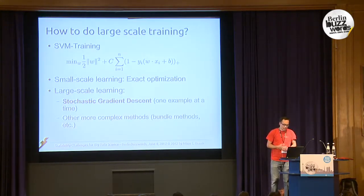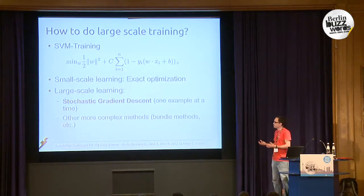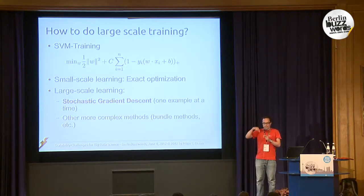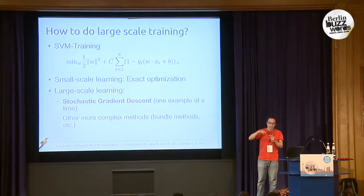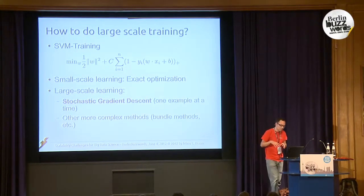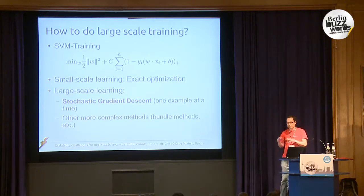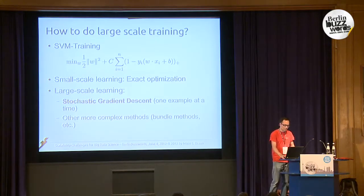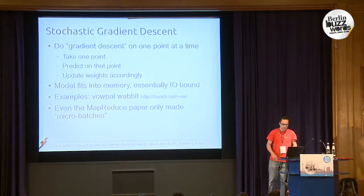People found that if you have a lot of data you can use stochastic gradient descent — you optimize the function one point at a time. This is guaranteed to converge, though very slowly, but if you have so much data you can do it anyway because eventually you will learn the right thing.